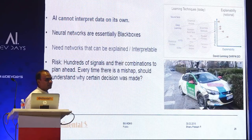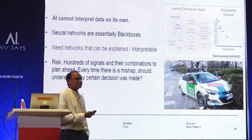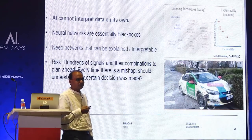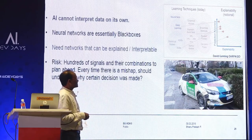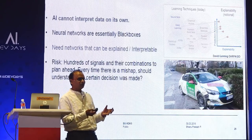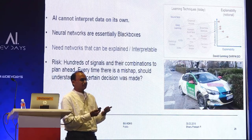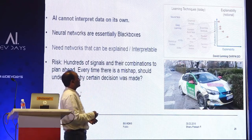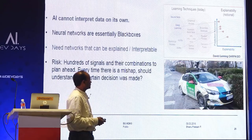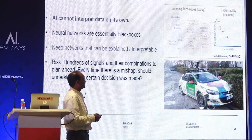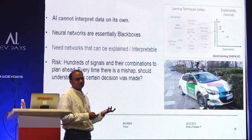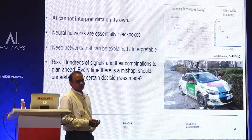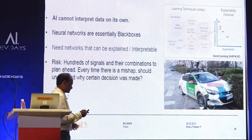Another challenge is explainability or interpretability. Neural networks cannot interpret data on their own, and as you go deeper into the networks you don't know what each layer is conveying — it's essentially a black box. For example, if an automated Google car hits a sidewalk, you need to reason why it happened in order to even solve the problem.